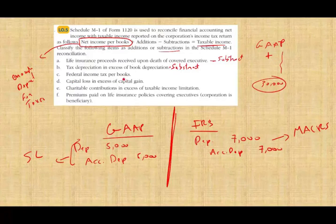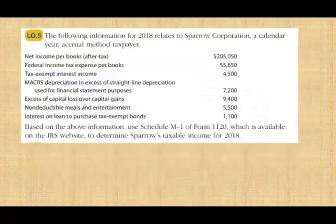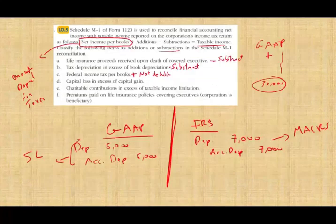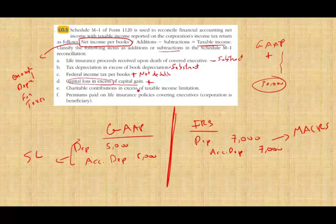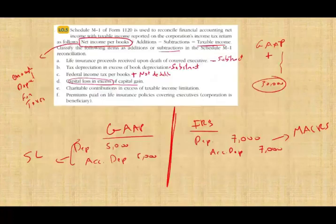Federal income taxes per books — hopefully you know this by now — we always add this back because it was a deduction for GAAP that's not deductible for tax purposes. Capital loss in excess of capital gain: we also have to add that back because for tax purposes we cannot use excess capital losses beyond capital gains.